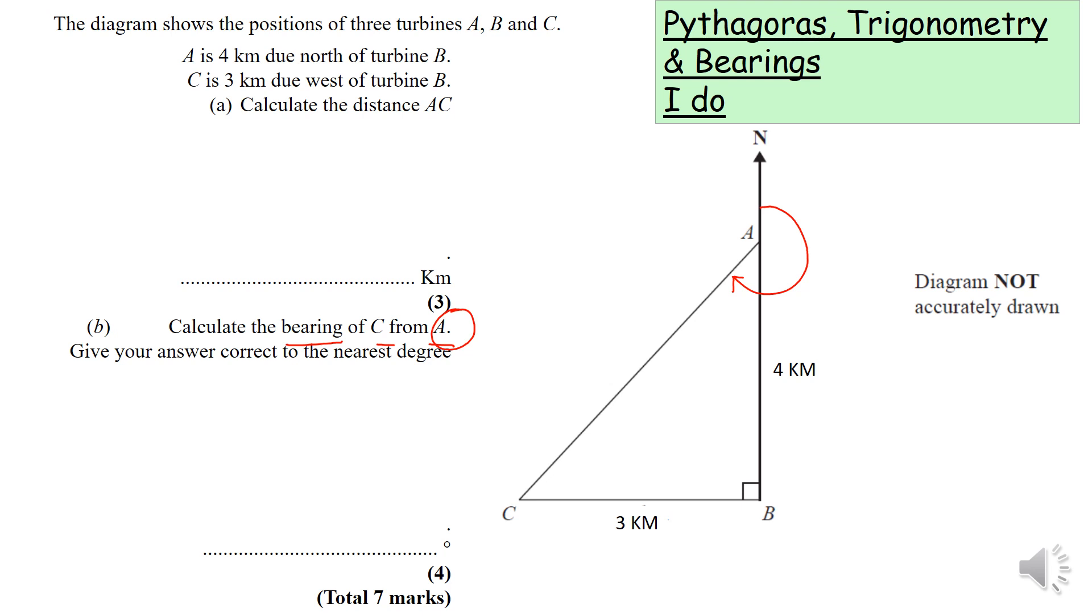Here we can see that is a semi-circle, a straight line. We know that is going to be 180 degrees, so what we need to work out is this small angle here.